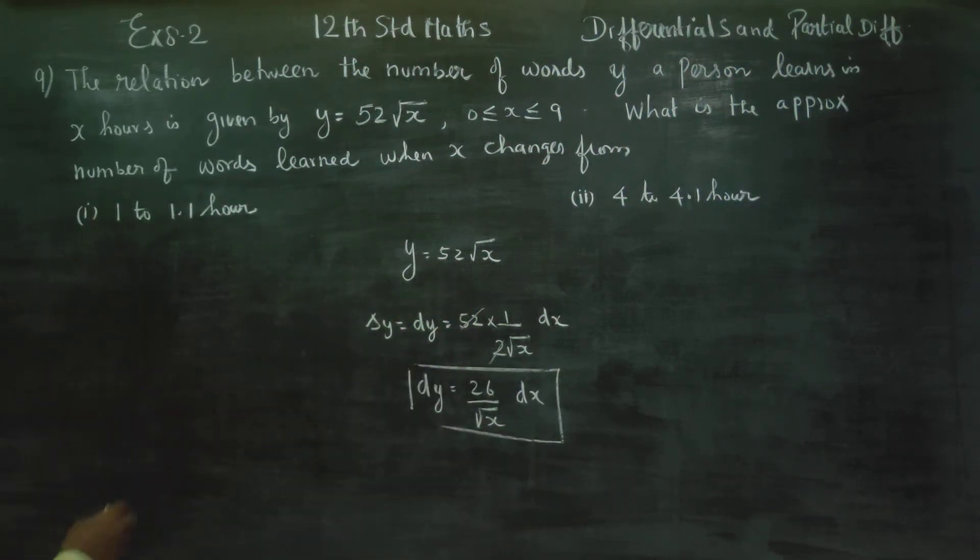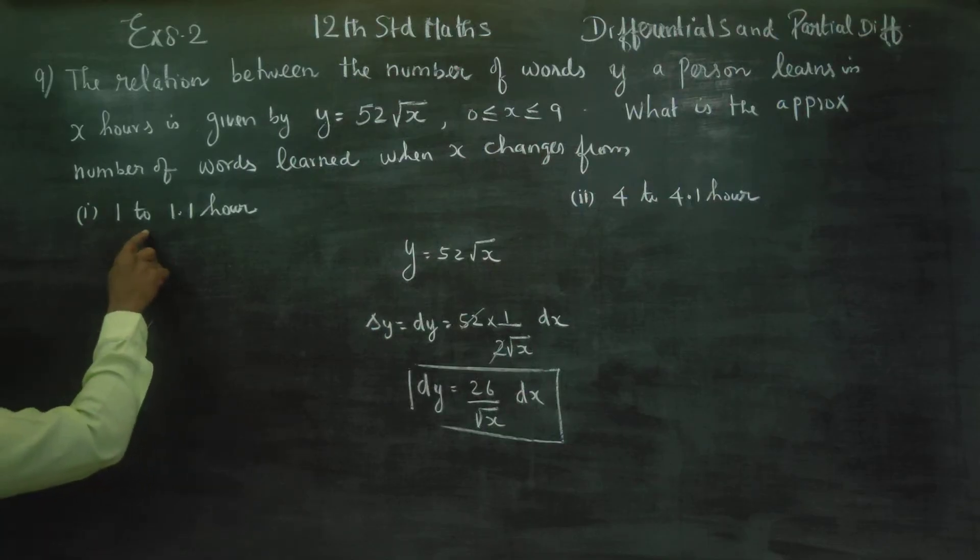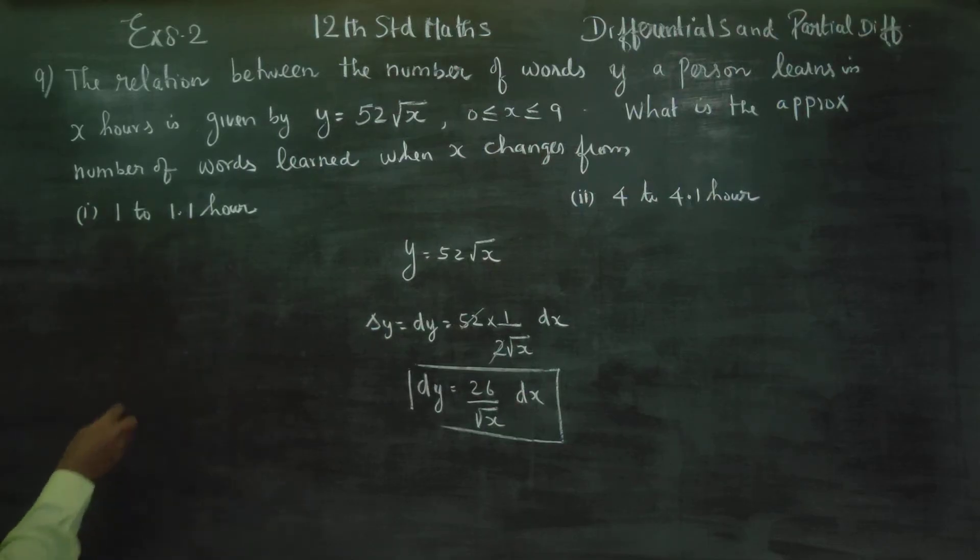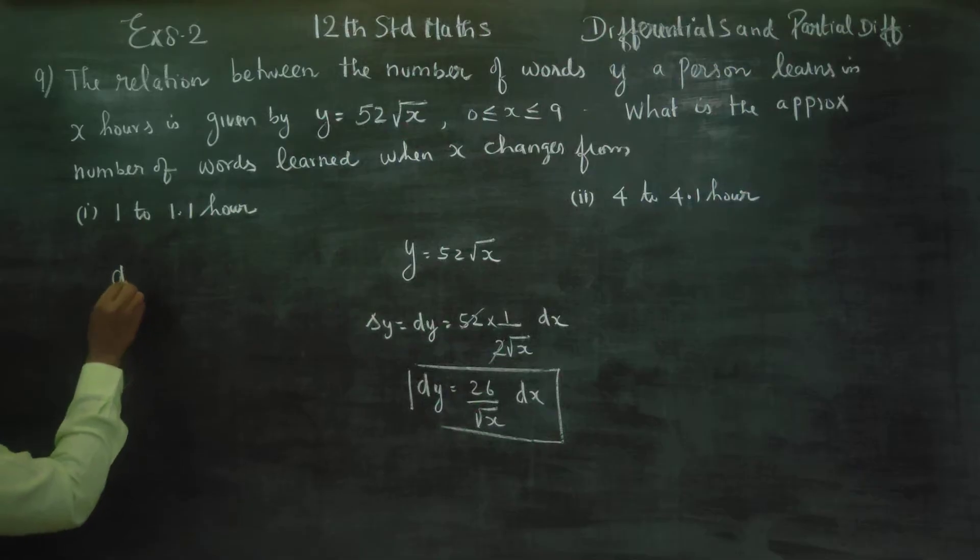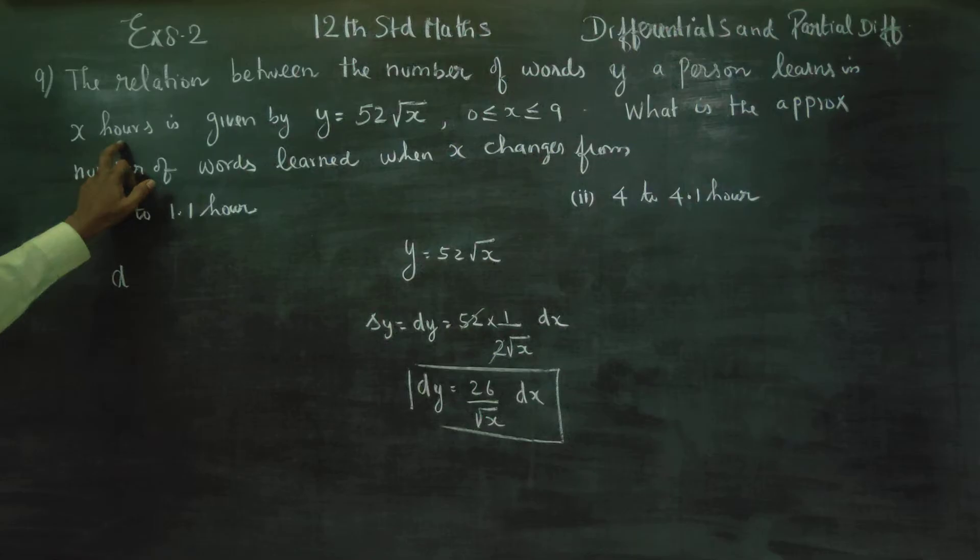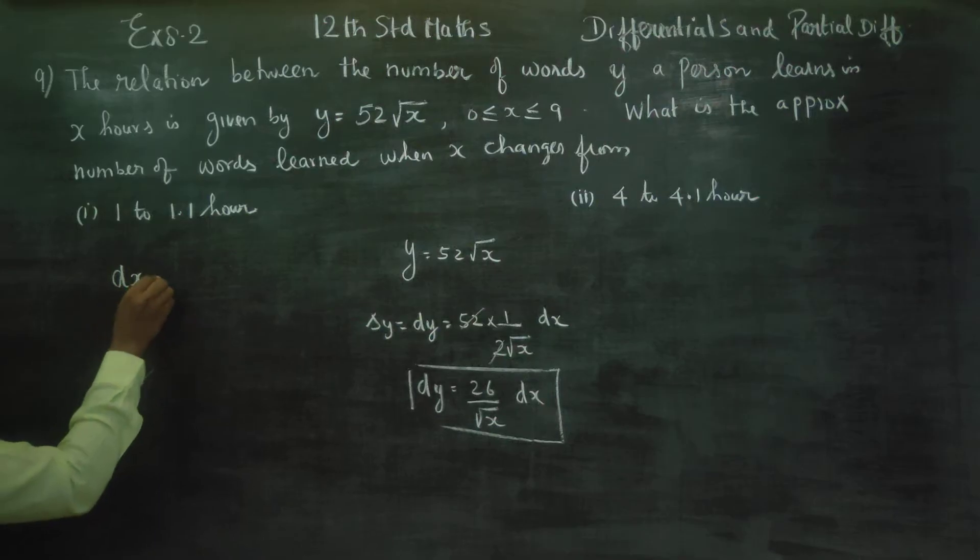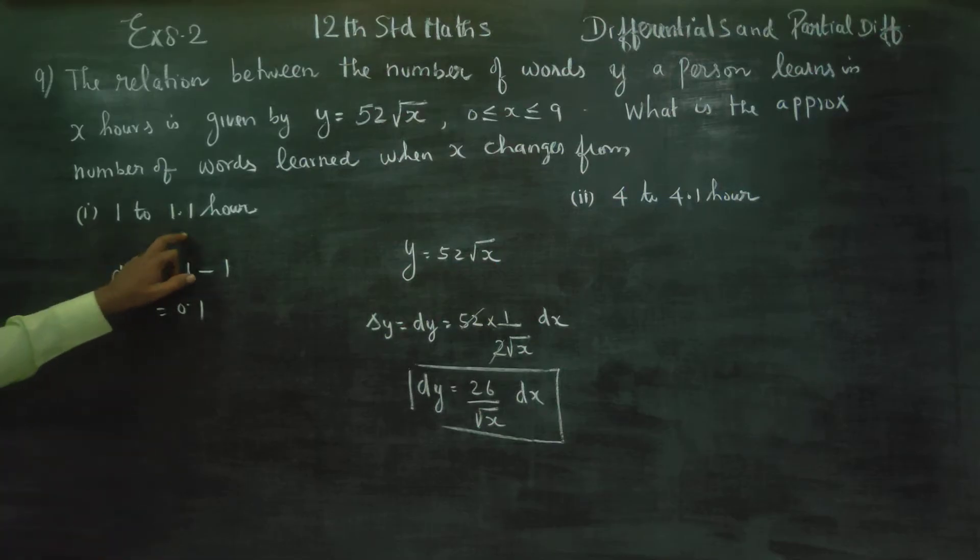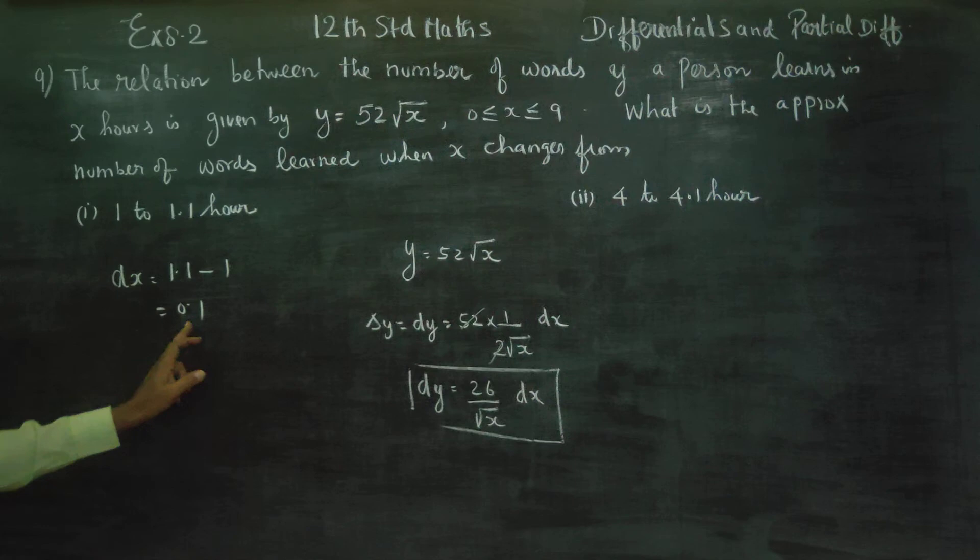Coming to the first sum. 1 to 1.1 hours. Change in the timings. It's hours, not in months. First, I have to find the value of dx. dx is change in the timing. Timing is 1.1 minus 1. That is 0.1.